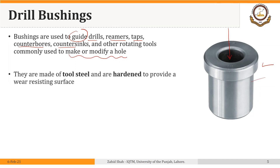Bushings are made of tool steel and are hardened to provide a wear-resisting surface. The outer surface is installed in the jig body — generally by pressing it in — so it must be hard enough not to wear out. The inner diameter is where the drill bit or other cutting tool passes through. The tool may touch this inner surface, so it should be hard enough not to wear out. Even if chips touch this inner diameter, it should not wear out.